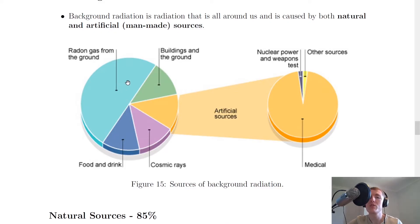For natural sources, first of all, we have radon gas from the ground. You'll see that contributes about half of the overall background radiation. We have buildings and the ground, and that is because there are radioactive materials in soil, and soil can be used as a building material. And we have cosmic rays, which are rays from space, and we have food and drink.